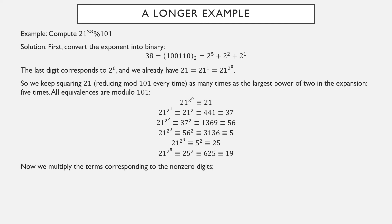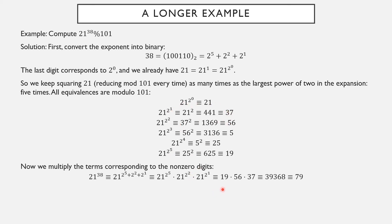I multiply together the terms corresponding to the non-zero digits in the exponent: 2 to the 5th, 2 squared, 2 to the 1st. The 2 to the 5th term is 19, the 2 squared term is 56, the 2 to the 1st term is 37. So I just have to multiply together 19 times 56 times 37. That's 39,368, which I can reduce mod 101 to 79. So ultimately, 21 to the 38 is equivalent to 79 mod 101.